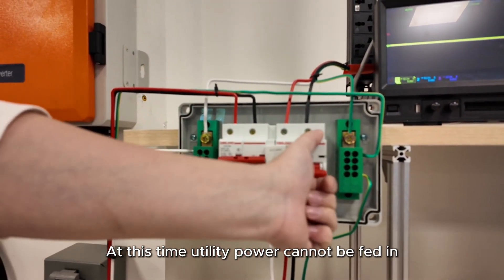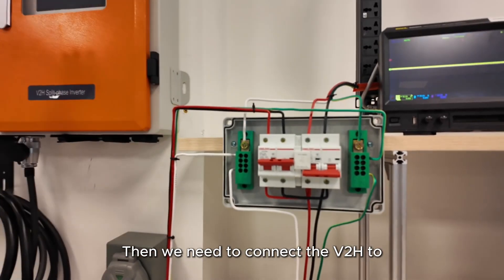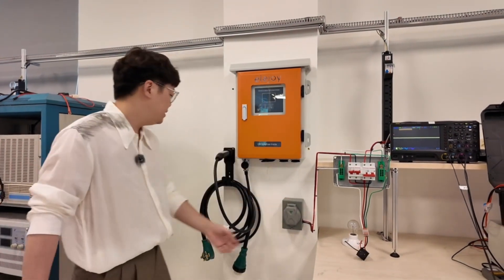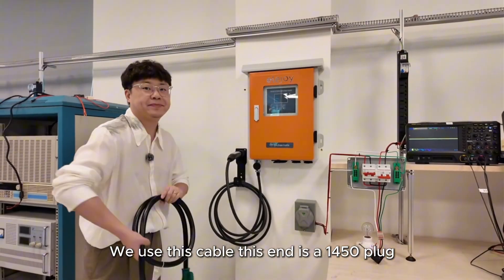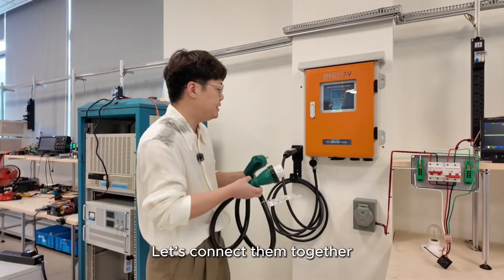At this time, utility power cannot be fed in because of the locking mechanism. Then we need to connect the V2H to the backup power waterproof outlet. We use this cable. This end is a 1450 plug. This end is an SS2 plug. Let's connect them together.